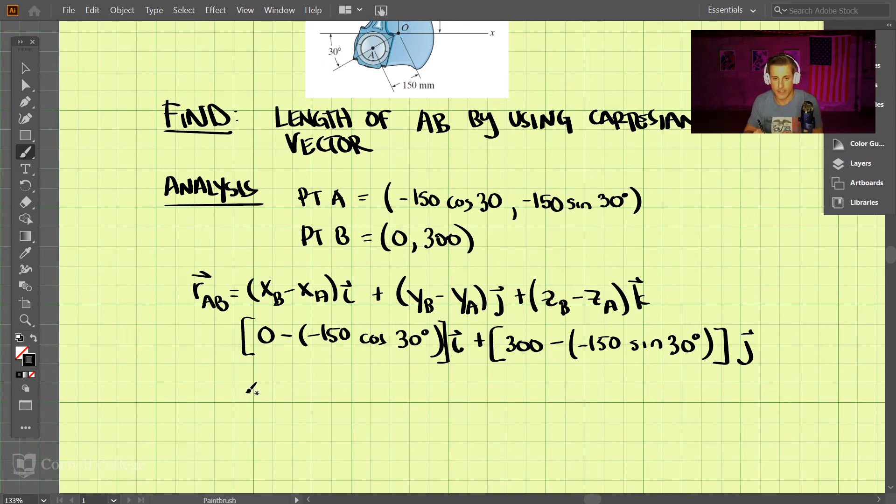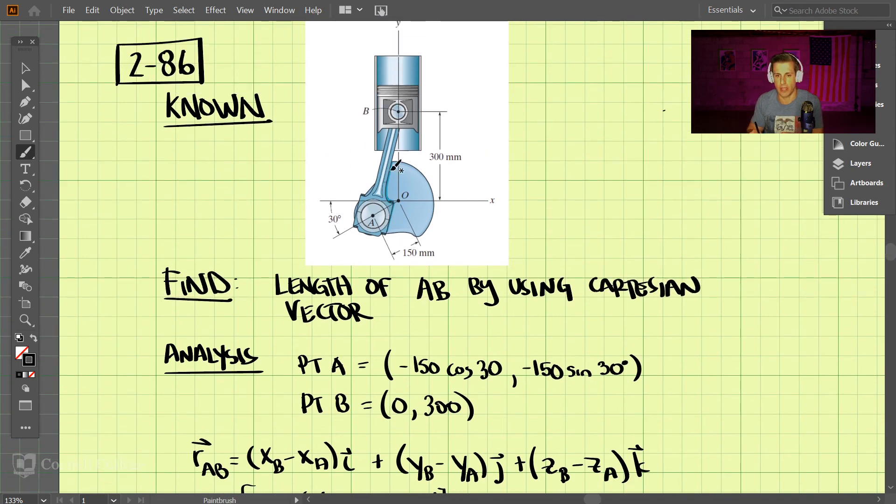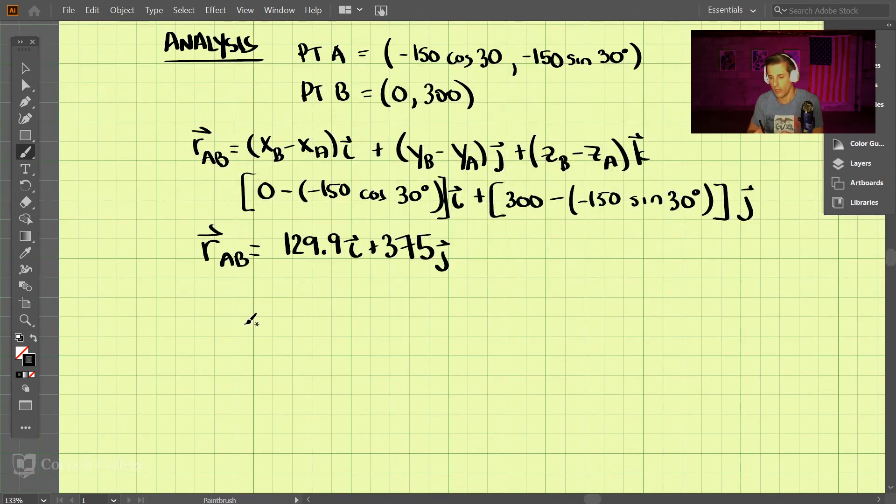All right, so performing all this, we have the vector from A to B. I left off the z, we don't have any z in this problem. The vector from A to B is 129.9i and 375j, both positive. And if you take a look at that, that should seem right. From A to B, we should be moving positive in the x direction and positive in the y direction.